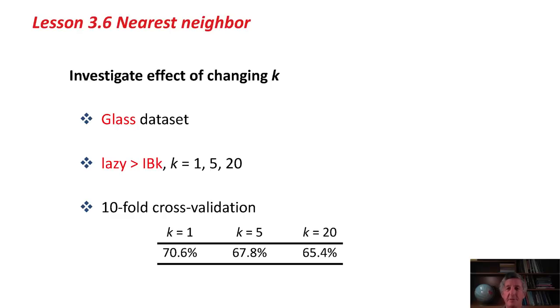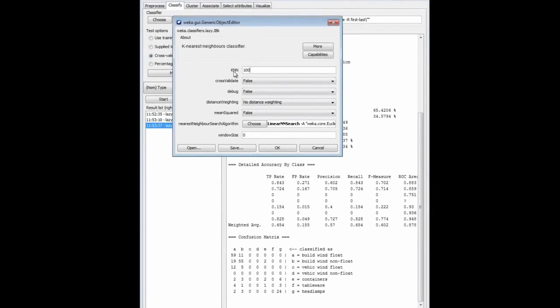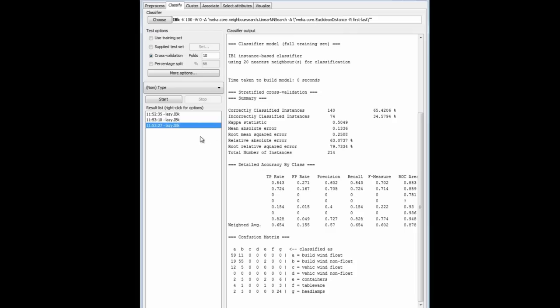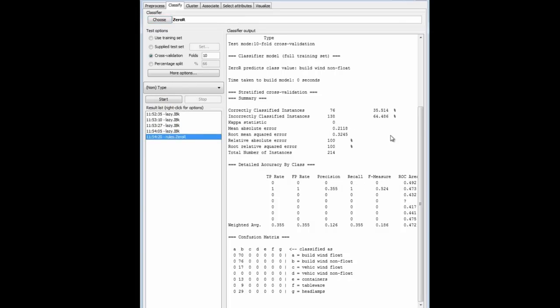But then it would always start to decrease again. If we set k to be an extreme value close to the size of the whole data set, then we're taking the distance of the test instance to all of the points in the data set and averaging those, which will probably give us something close to the baseline accuracy. Here, if I set k to be a ridiculous value like 100, I'm going to take the 100 nearest instances and average their classes, we get an accuracy of 35%, which I think is pretty close to the baseline accuracy for this data set. Let me just find that out. With 0R, the baseline accuracy is indeed 35%.